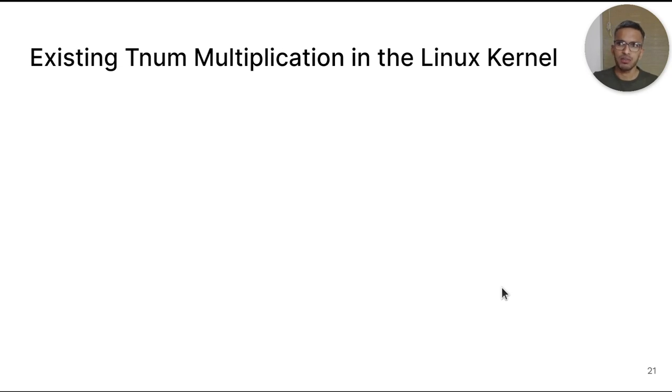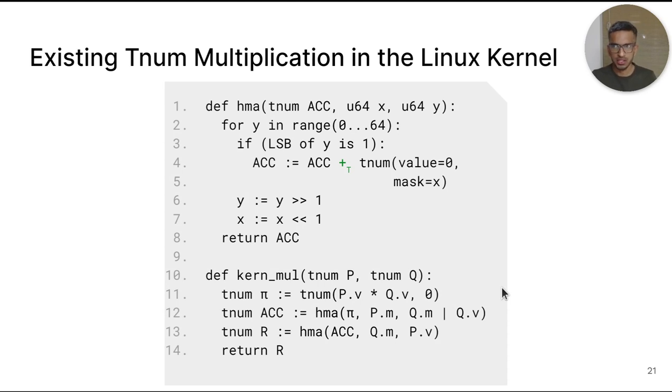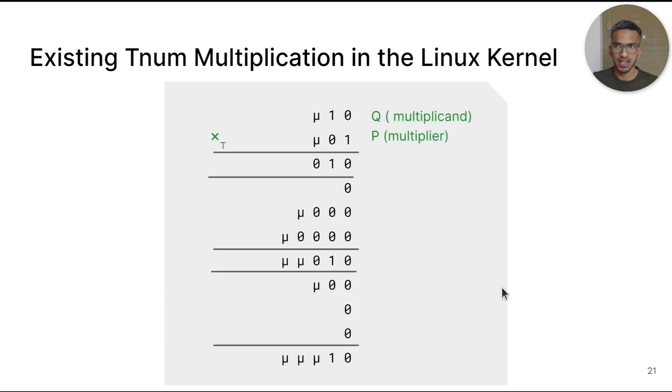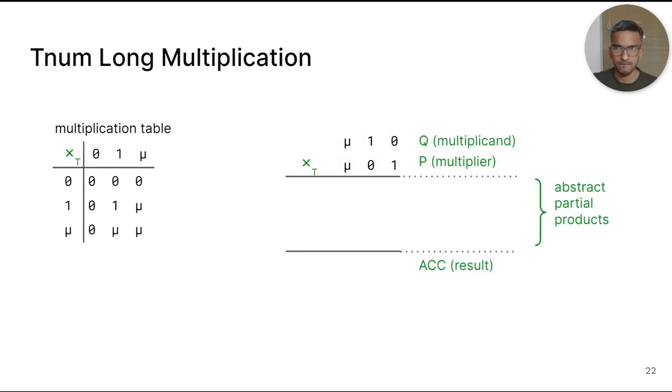The existing algorithm for multiplication of TNUMs in the Linux kernel is shown here. I am not going to go into the details of this algorithm. However, a key point is that the algorithm uses two loops over the digits of the multiplier and adds up 2N plus 1 partial products. The addition must occur using TNUM addition since the partial products are all abstract. As we will show now, we can improve both the precision and speed of this overall operation.